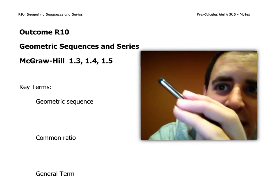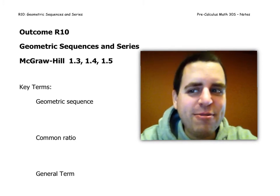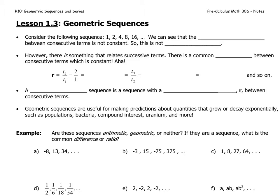Welcome to the first video on outcome R10. We're going to deal with geometric sequences and series. Welcome to lesson 1.3. We'll start by considering the sequence 1, 2, 4, 8, and 16. There is a pattern to this sequence, but it's different from the arithmetic ones we've seen before. The difference between terms is not constant, so this is not arithmetic.